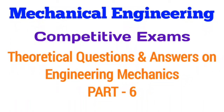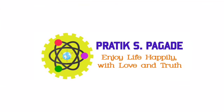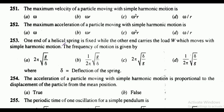Hi friends, welcome. This is Part 6, the last part of our mechanical engineering competitive exams theoretical questions and answer series on engineering mechanics. Question 251: the maximum velocity of a particle moving with simple harmonic motion. Options are omega, omega r, omega square r, and omega upon r.